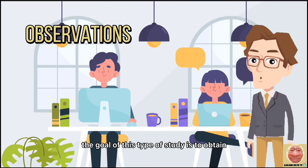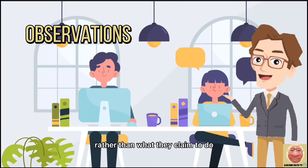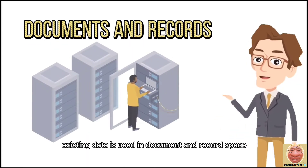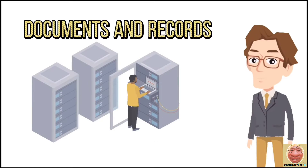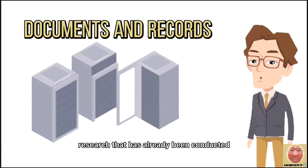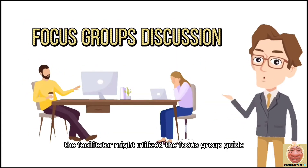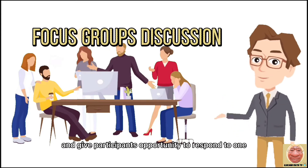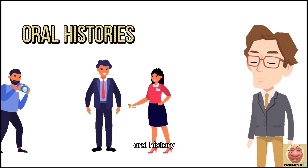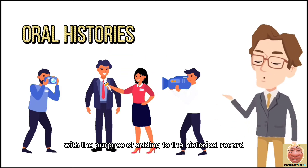The goal of observations is to obtain more dependable information — researchers can collect information on what participants actually do rather than what they claim to do. Documents and records research uses existing data such as attendance data, meeting minutes, and financial information. This can be both efficient and cost-effective. Focus Group Discussion: the facilitator uses a guide to ask questions and prompt participants, giving them opportunity to respond to one another's views. Oral History is a way of conducting historical research through recorded conversations between a narrator with first-hand knowledge of a historically significant event and a knowledgeable interviewer, with the purpose of adding to the historical record.